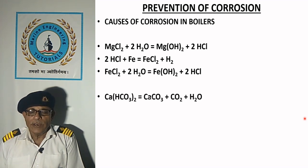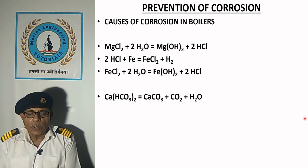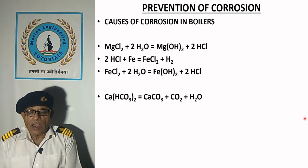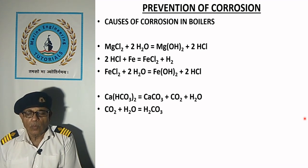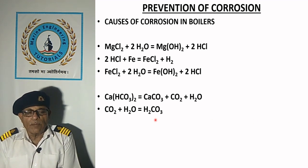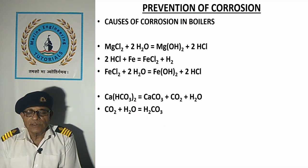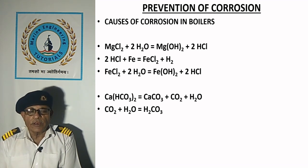On heating, calcium bicarbonate is decomposed into calcium carbonate, carbon dioxide and water. Carbon dioxide and water recombine to form carbonic acid, which causes acidity in the water. Carbon dioxide is eliminated by addition of amines in boiler water.